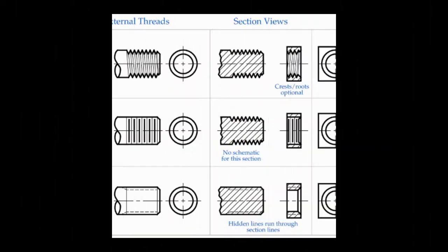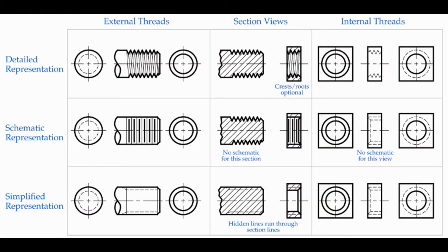When we put threads on a drawing, there are three ways to do it: the detailed representation, the schematic representation, and the simplified representation. The simplified representation is what we'll use in this class. A detailed representation is exactly what the thread would look like — it takes a very long time to draw by hand and uses a lot of computer memory. Because of the helix and thread form, there are a lot of lines, so if you shrink the view it's going to be almost all black and difficult to see. These are almost never used.